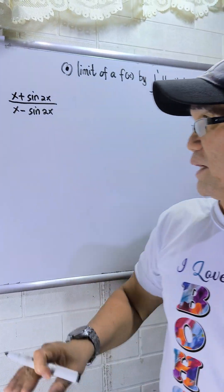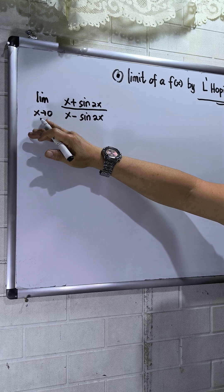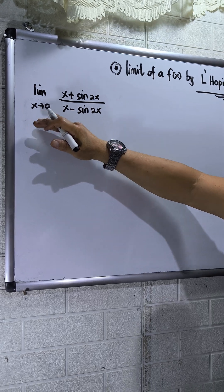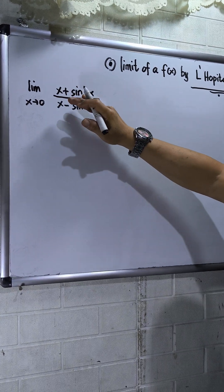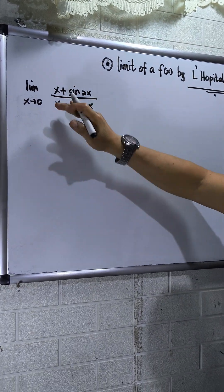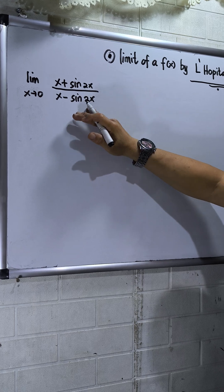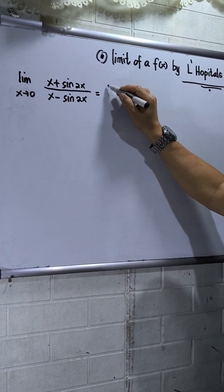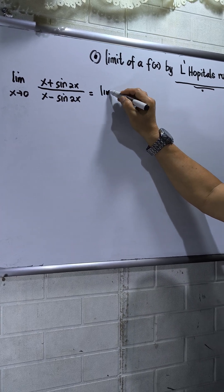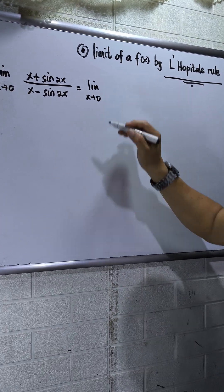So I have here: limit as x approaches 0 of the function (x plus sine 2x) over (x minus sine 2x). So we will apply L'Hôpital's rule, x approaches 0.